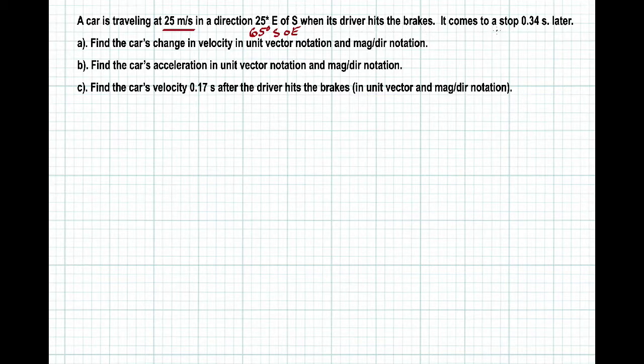And the driver hits the brakes and it comes to a stop, 0.34 seconds later. So we're going to be asked to find the change in velocity, that is the delta v, in unit vector notation and magnitude direction notation. You should know how to do that because we've done that already, but I'll walk you through it. And then we need to find the car's acceleration, which is change in velocity over change in time, also in unit vector notation and magnitude direction notation. And then we want to find the velocity after a certain amount of time after the driver hits the brakes.